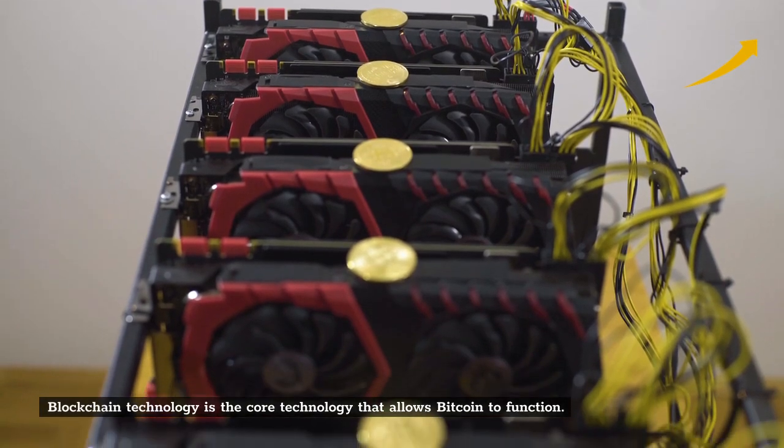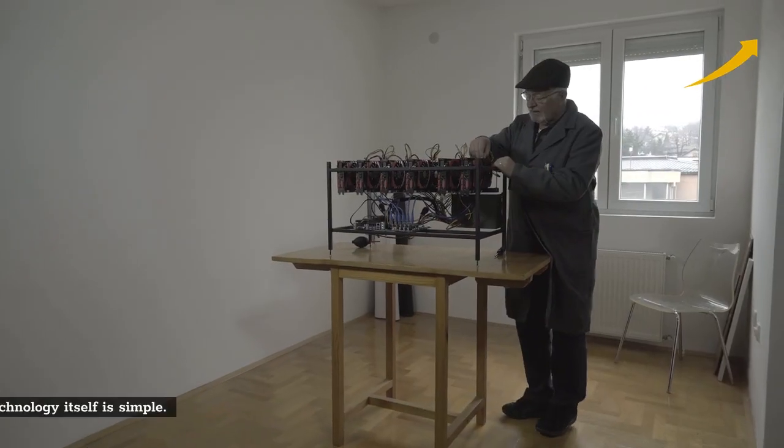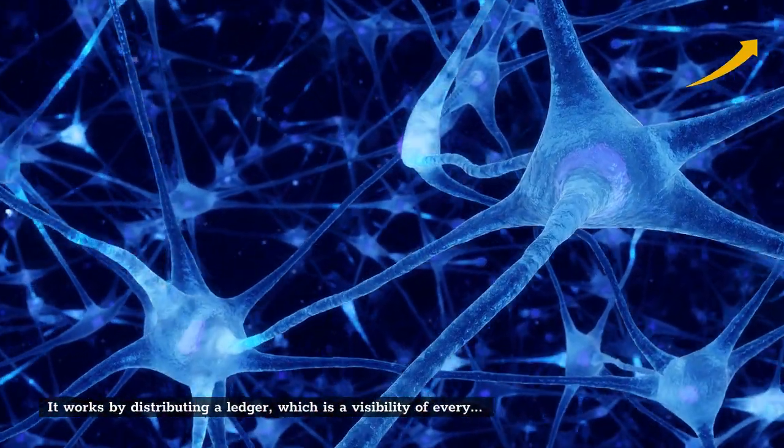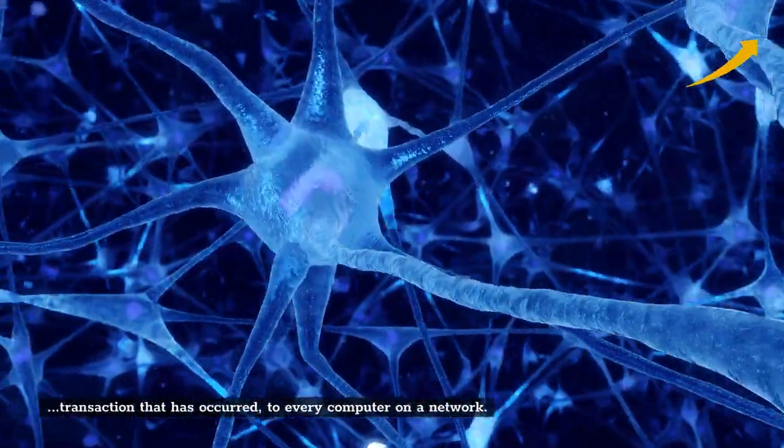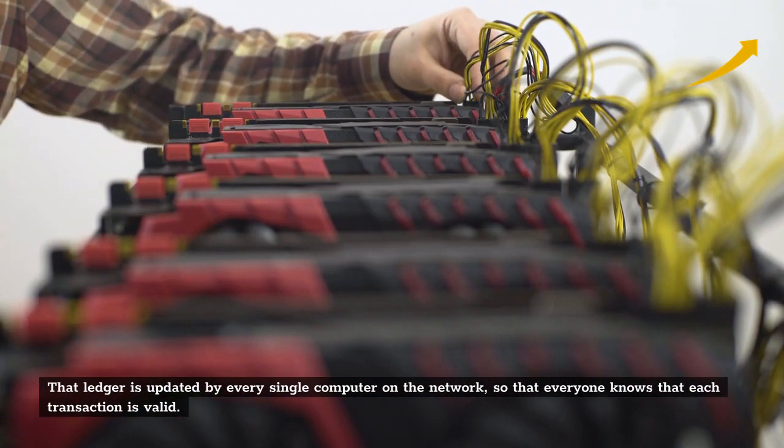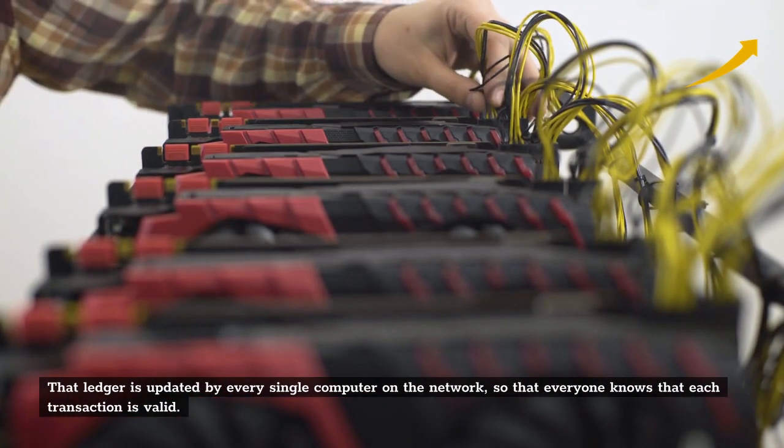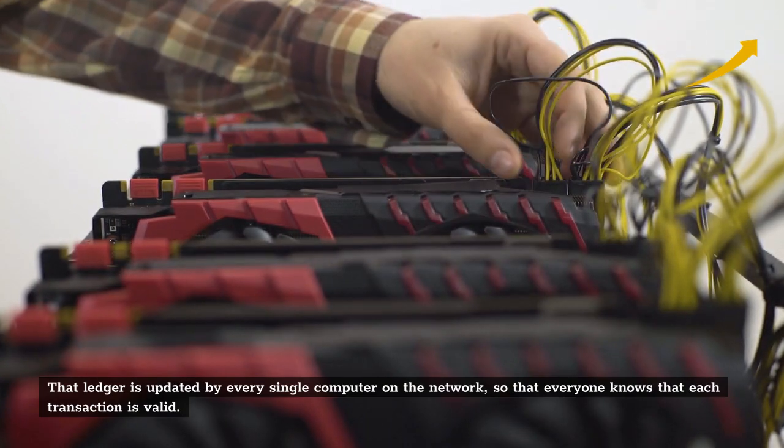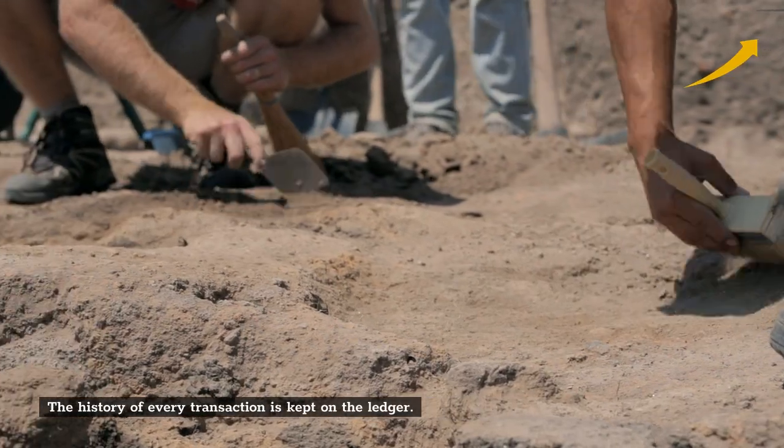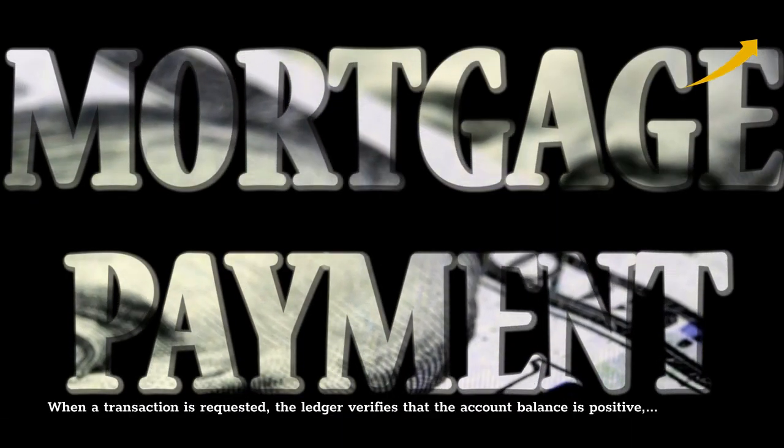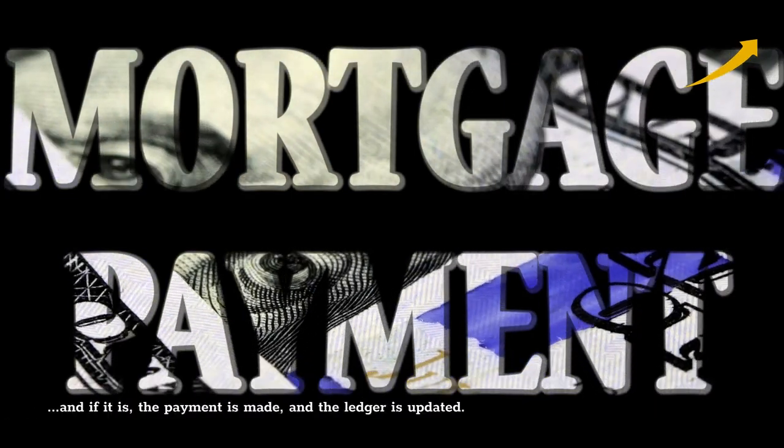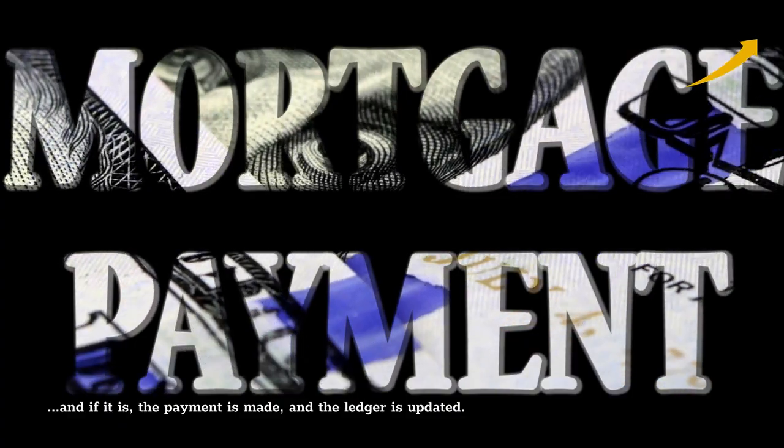Blockchain. Blockchain technology is the core technology that allows Bitcoin to function. The technology itself is simple—it works by distributing a ledger, which is a visibility of every transaction that has occurred, to every computer on a network. That ledger is updated by every single computer on the network so everyone knows each transaction is valid. When a transaction is requested, the ledger verifies that the account balance is positive, and if it is, the payment is made and the ledger is updated.